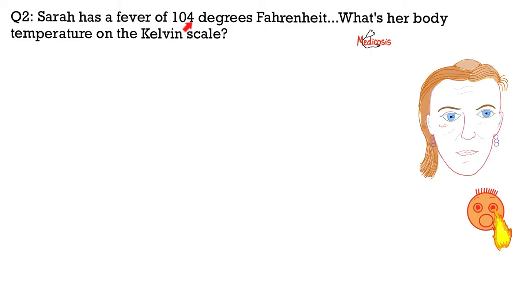Next, Sarah has a fever of 104 degrees Fahrenheit. What's her body temperature in Kelvin? Let's go. The temperature in Kelvin equals 5 over 9 multiplied by Fahrenheit minus 32, close parentheses, close this one again, plus 273.15. And what should I put here? 104. And then you do the math, you'll find the temperature of 313.15 Kelvin.